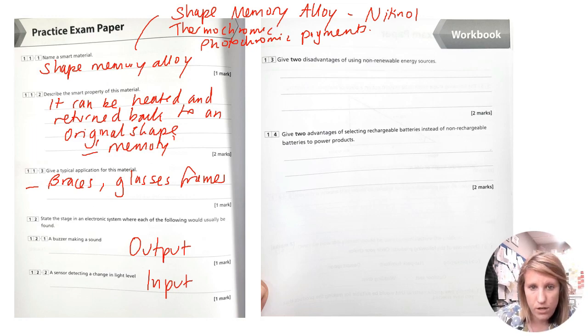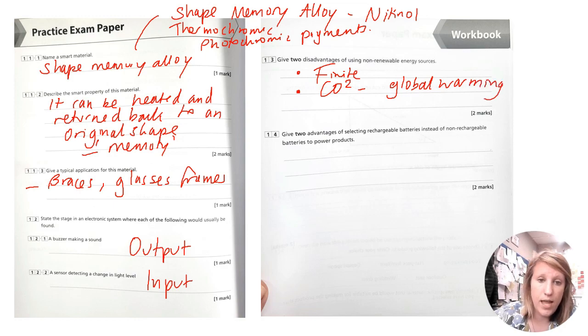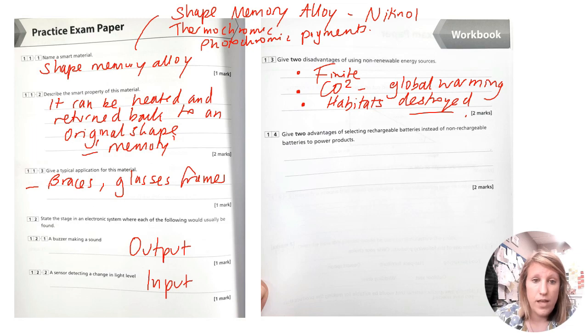Give two disadvantages of using non-renewable energy sources. Quite simple. Again, two disadvantages of using non, they are finite. They're running out. This is very similar to a question earlier, so I'm not going to go over this too much. They can cause CO2, which is contributing to global warming. Also it can cause issues with habitats, habitats being destroyed. So there you go. Two disadvantages of using non-renewable energy sources.